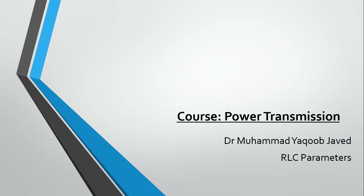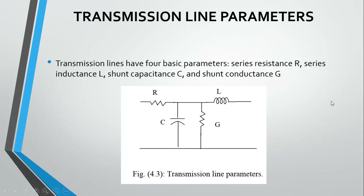Assalamu alaikum students, welcome to TechnoGenior. In this course on power transmission, today the topic we will study is RLC parameters of power transmission. As you all know, if we represent a transmission line as a simple circuit, we use R, L, C, and G parameters: R for resistance, L for inductance, C for capacitance, and G for conductance.